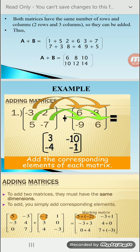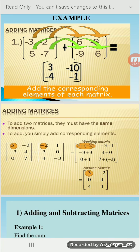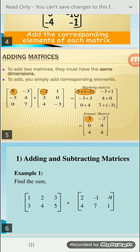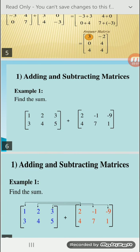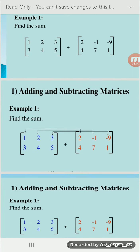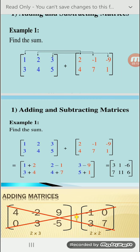The condition for addition is the same number of rows and the same number of columns. One more example: first matrix has elements 1, 2, 3, 3, 4, 5 and the second matrix has elements 2, −1, −9, 4, 7, 1. Both matrices have dimension 2×3, so the resultant is 3, 1, −6, 7, 11, 6.